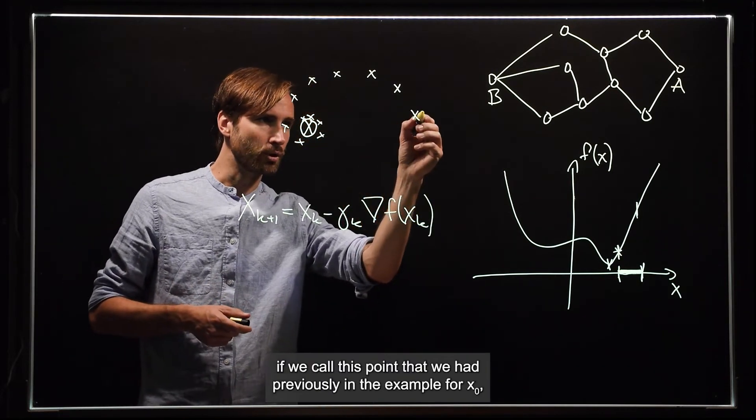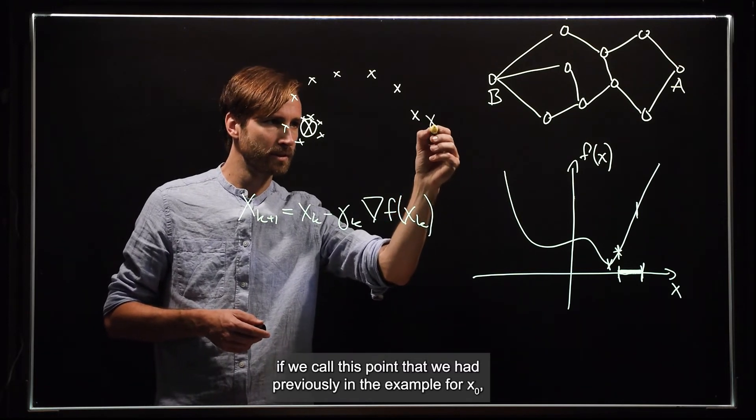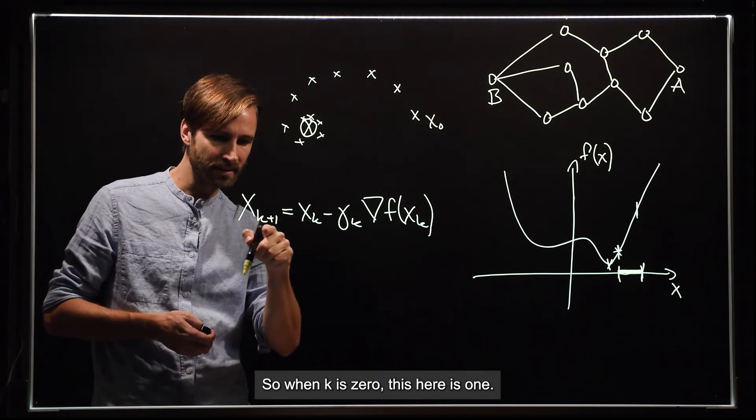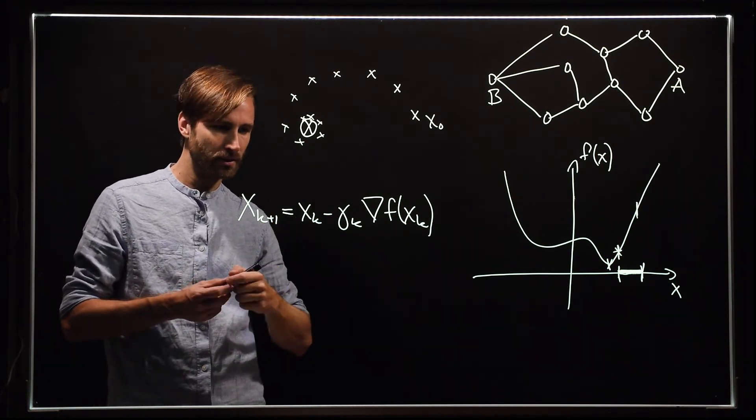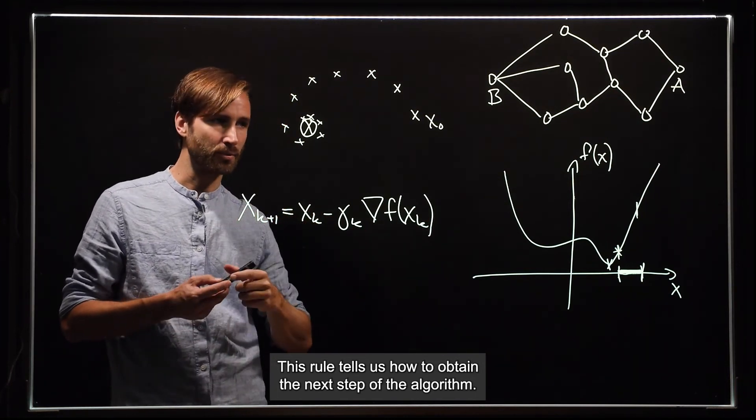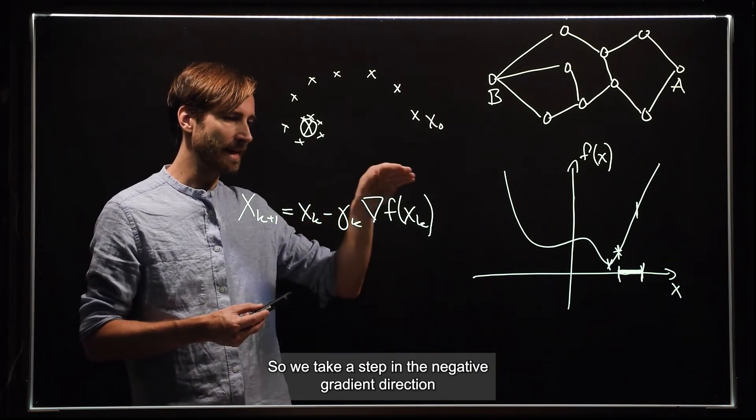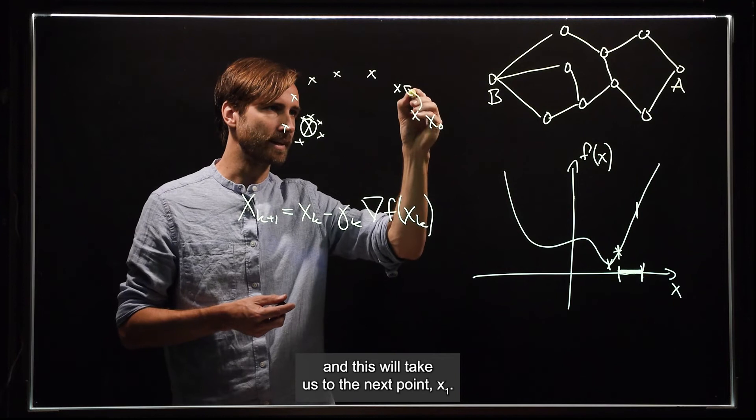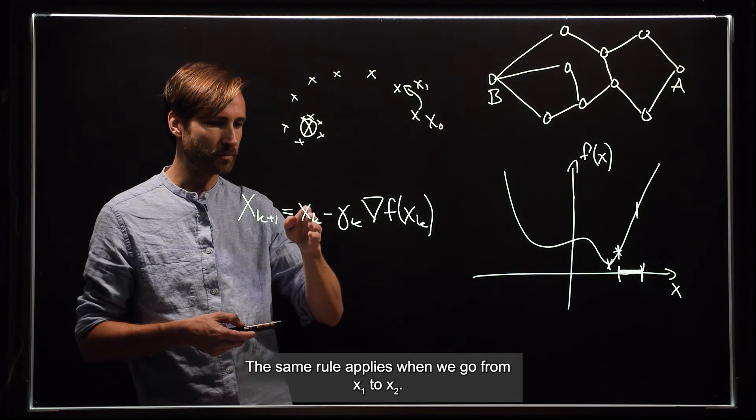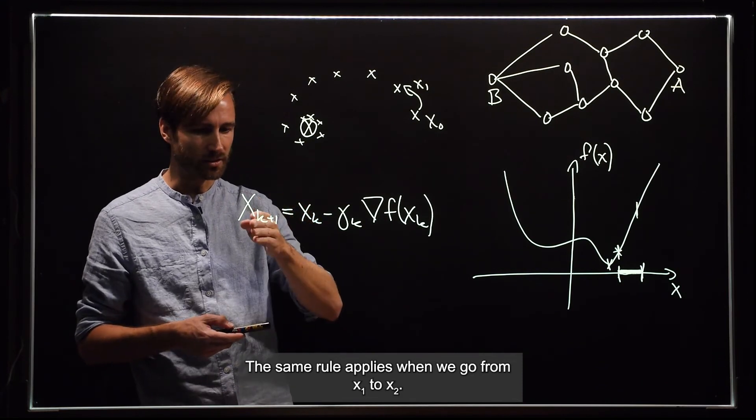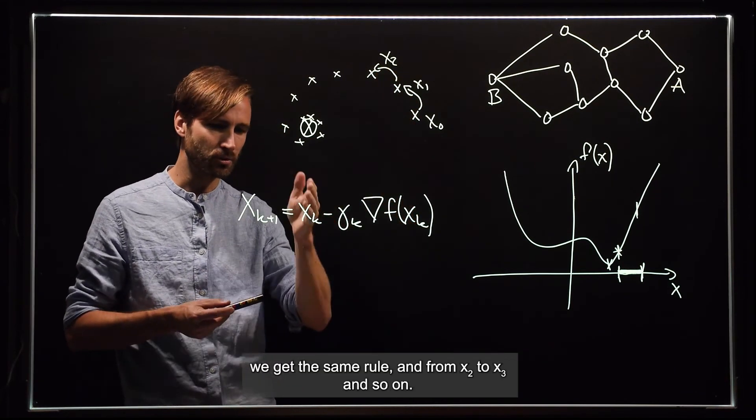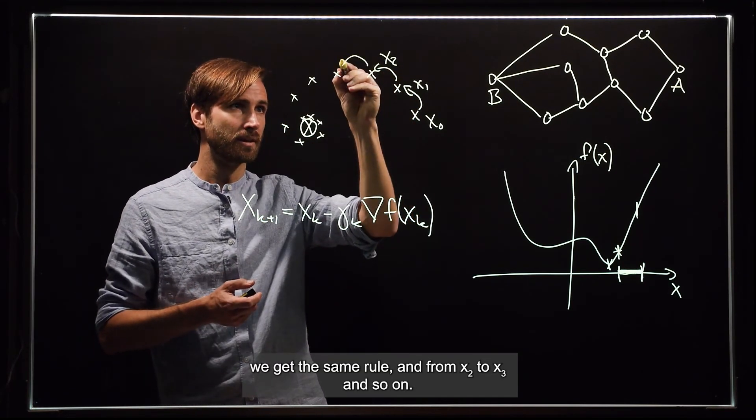If we call this point that we had previously in the example for x0, then we update. So when k is zero, this here is one. So these rules tell us how to obtain the next step of the algorithm. So we take a step in the negative gradient direction and this will take us to the next point x1. The same rule applies when we go from x1 to x2. So from x1 to x2, we get the same rule. And from x2 to x3 and so on.